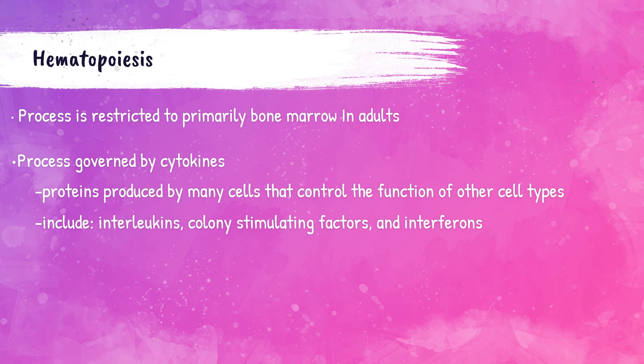Hematopoiesis is governed by hematopoietic cytokines. These are a family of intercellular ligands that stimulate hematopoietic cells to differentiate into specific types of blood cells.